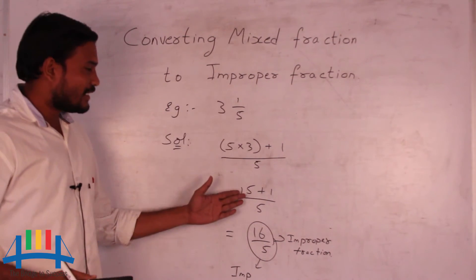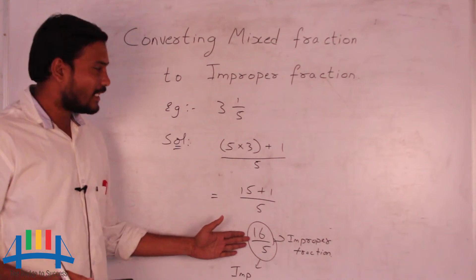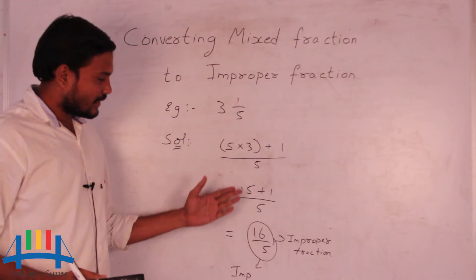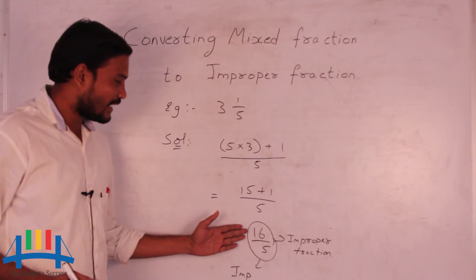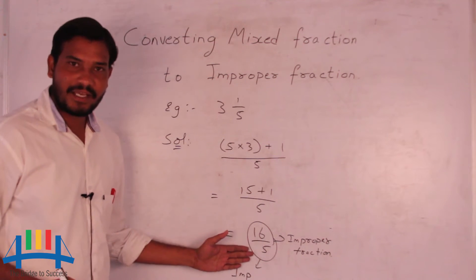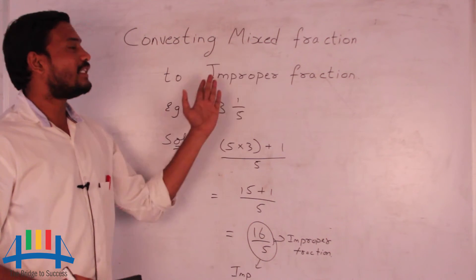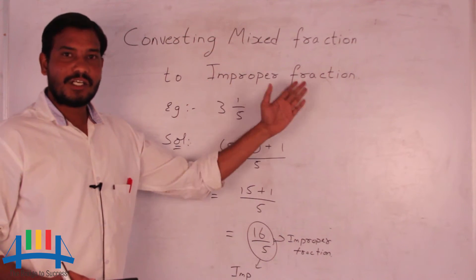So we have converted the mixed fraction into an improper fraction. That is, 3 and 1 by 5 is equal to 16 by 5 as an improper fraction. This is the way to convert mixed fractions to improper fractions.